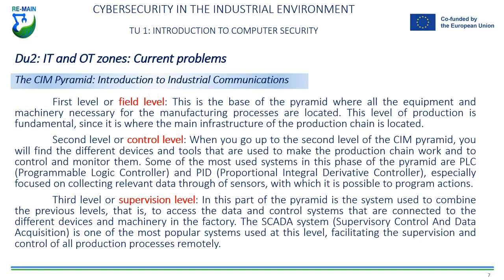Second level, or control level. Going up to the second level of the CIM pyramid, there are the different devices and tools used to operate the production chain and to control and monitor them. Some of the most commonly used systems in this phase are the PLC (Programmable Logic Controller) and PID (Proportional Integral Derivative Controller), especially focused on collecting relevant data through sensors, with which it is possible to program actions.